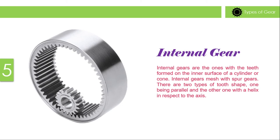Internal gear: Internal gears are the ones with teeth formed on the inner surface of a cylinder or cone. Internal gears mesh with spur gears. There are two types of tooth shape, one being parallel and the other with a helix in respect to the axis.